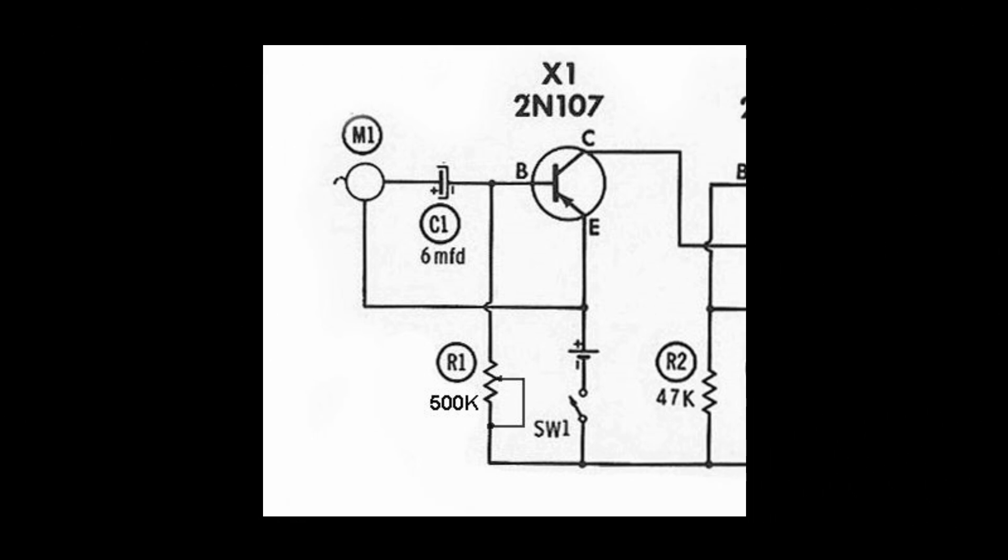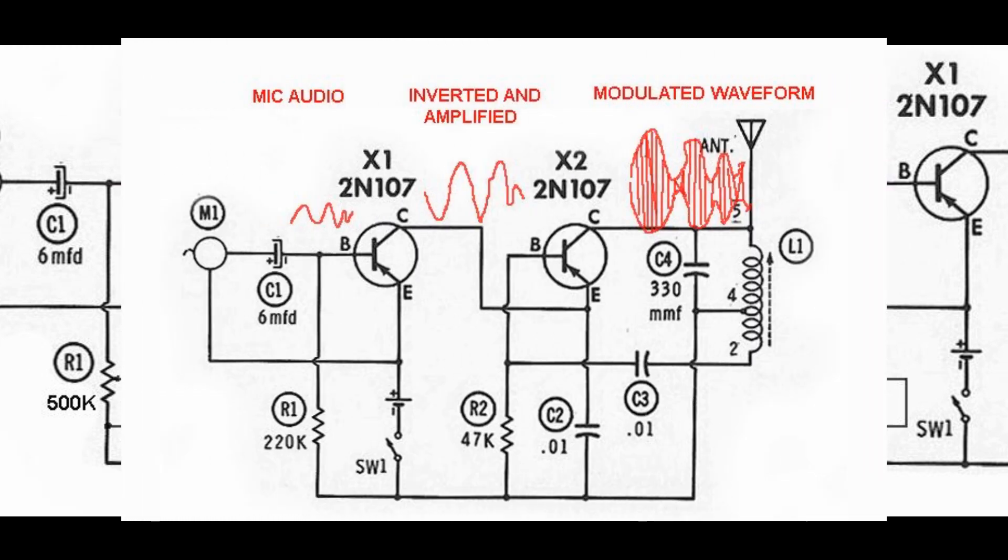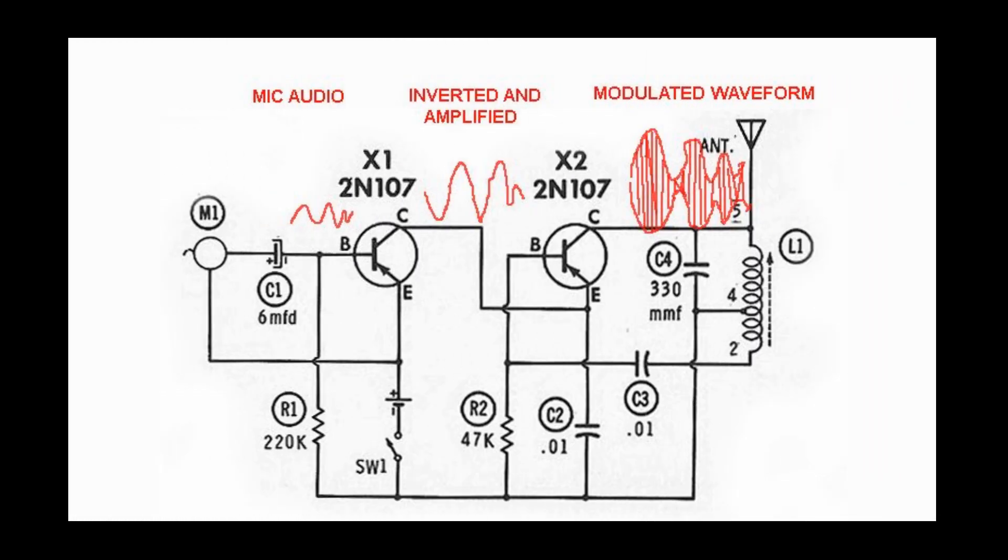X1, the modulator, is a simple class A audio amplifier. C1 prevents the bias from being shorted out by the microphone, yet allows the audio to pass to the base. The fixed bias on the base is varied instantaneously by the microphone's audio signal—that's AC. Amplification and phase inversion occurs, of course, because it's an inverting transistor amplifier. The collector to emitter current is varied, dragging and releasing the voltage up and down that's available for our oscillator stage, X2. By the way, X2 represents a fairly fixed load at rest—it's a few thousand ohms, so X2 looks like a collector resistor connected to the power supply.